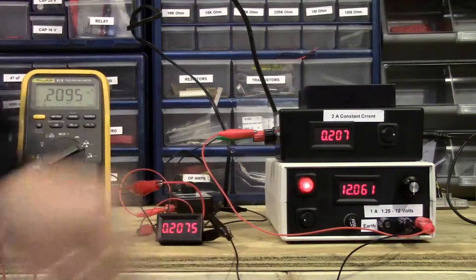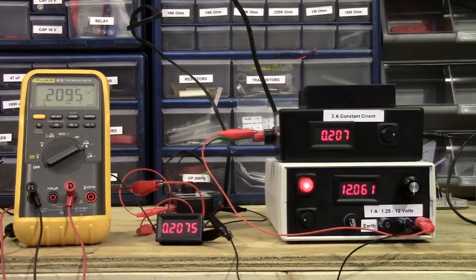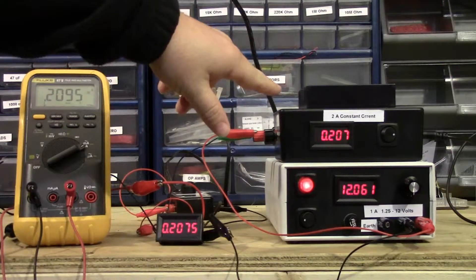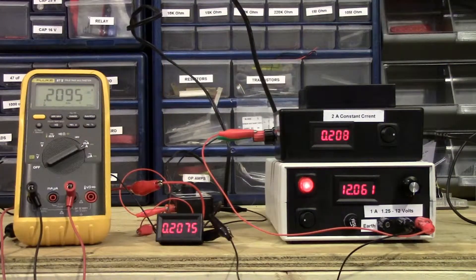Over on the right we have our power supply set to 12 volts. We have an EEV blog inspired constant current set to draw a constant 200 milliamps.